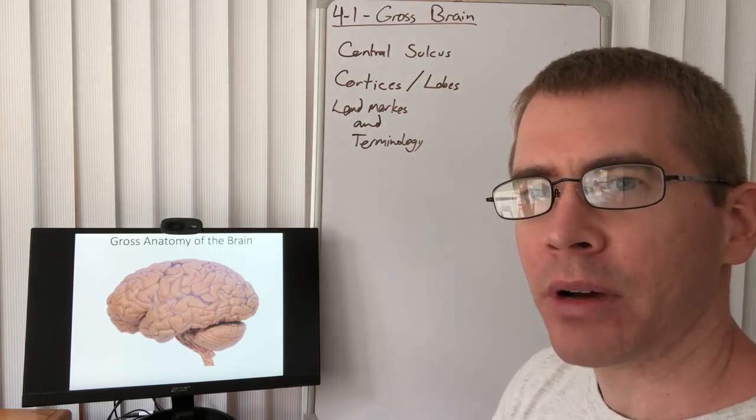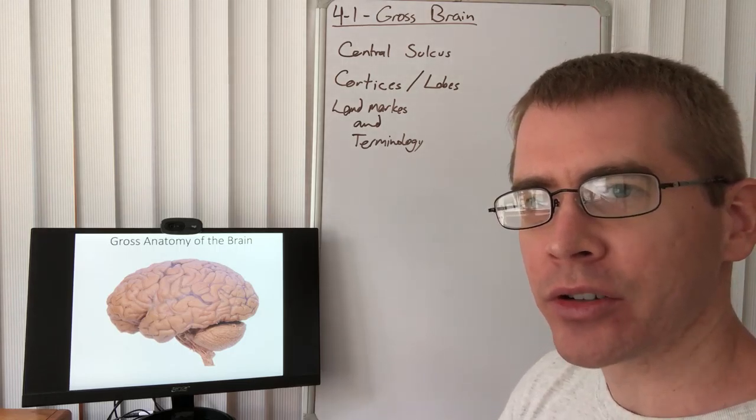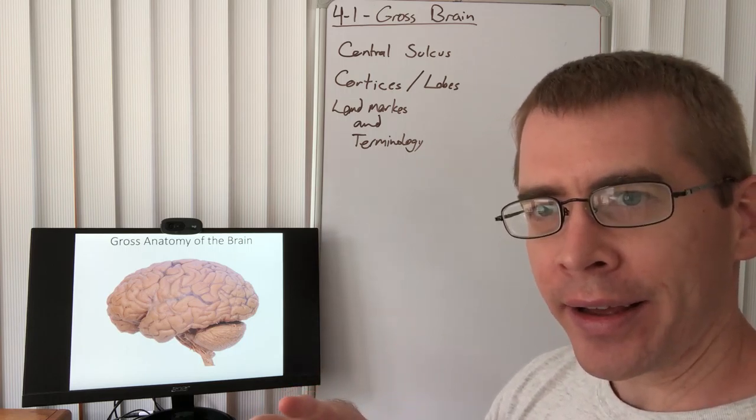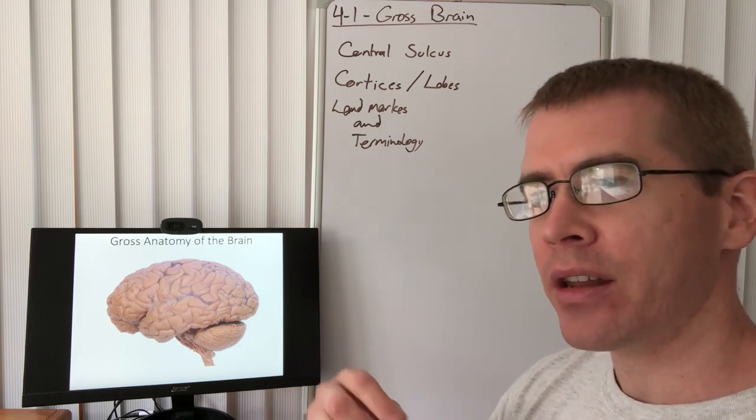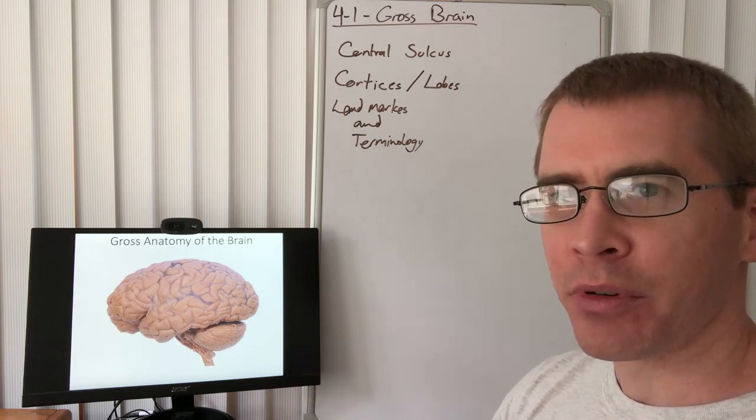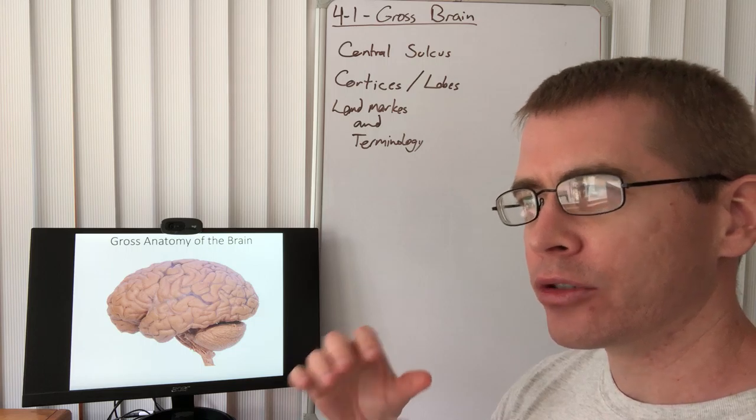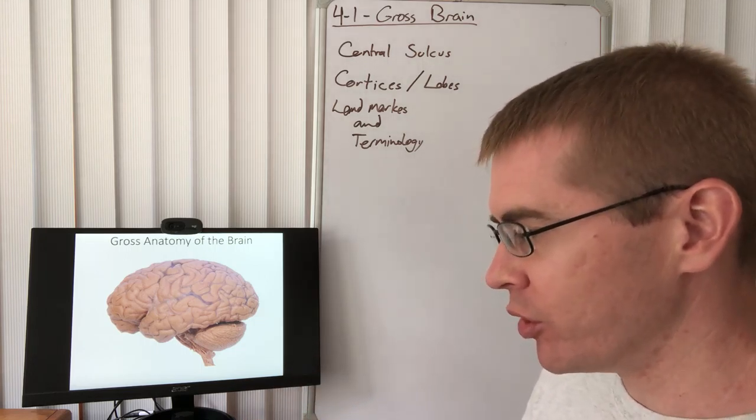Alright, now we're going to be talking about the brain, the gross anatomy of the brain, to start off with before we get into the internal nuclei and the circuits that make up the functional elements of the brain. So this is lecture 4-1 where we're going to introduce some of this terminology about the brain and show you some of the primary features.